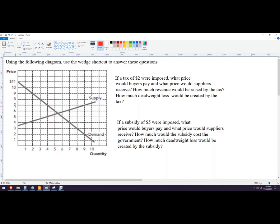The price the sellers would keep would be $5. The tax revenue, so I guess I could draw this right here. So this would be the tax revenue right here.